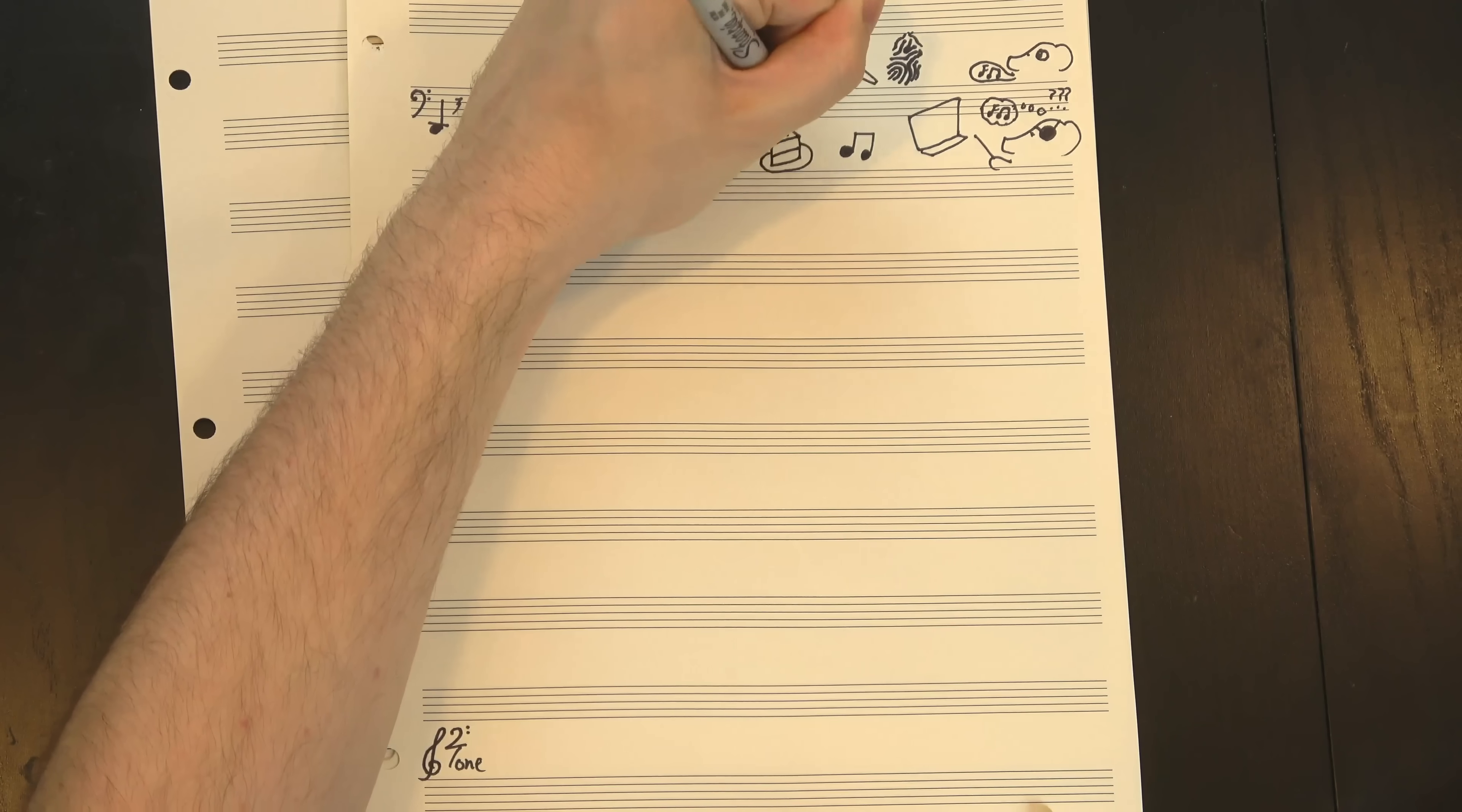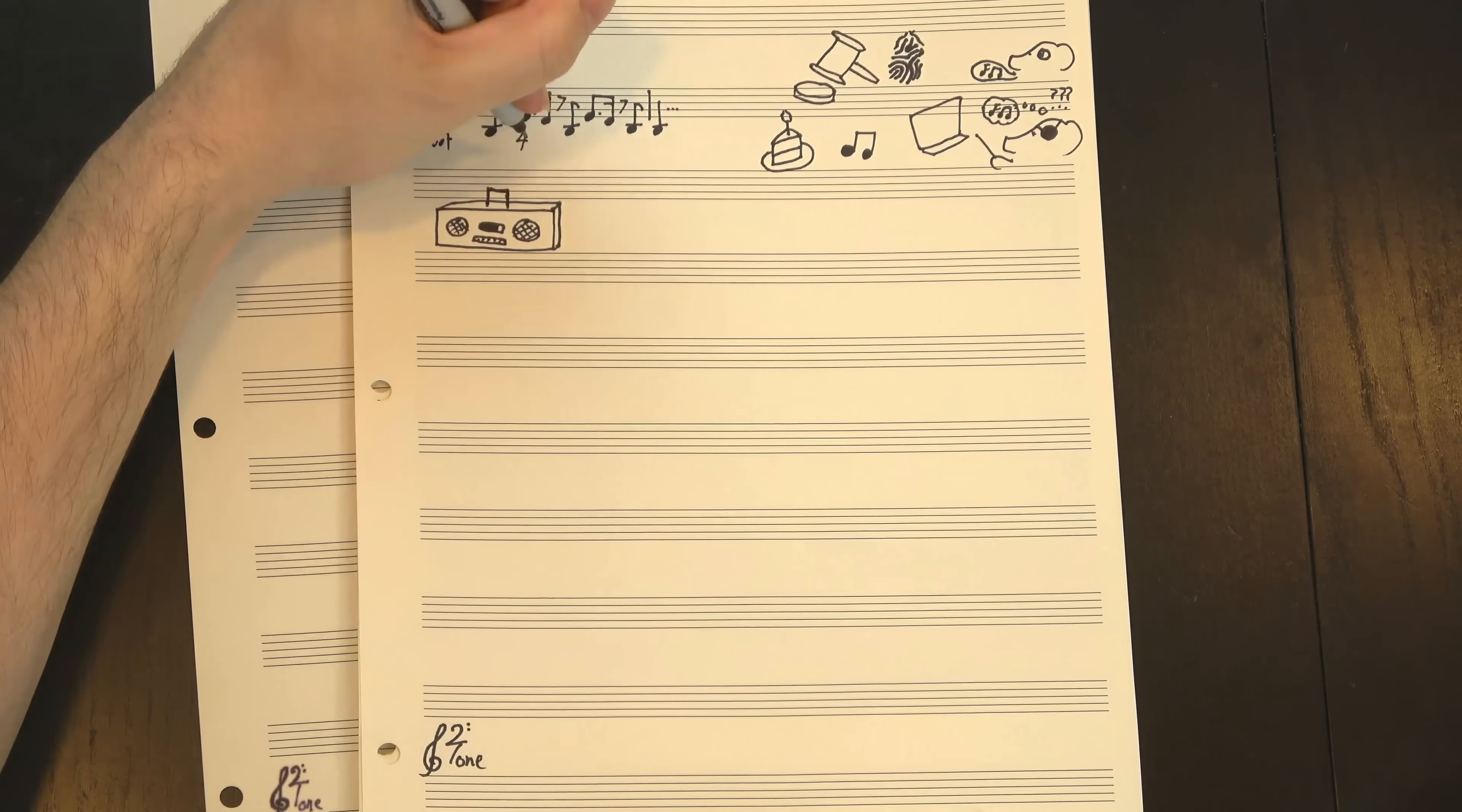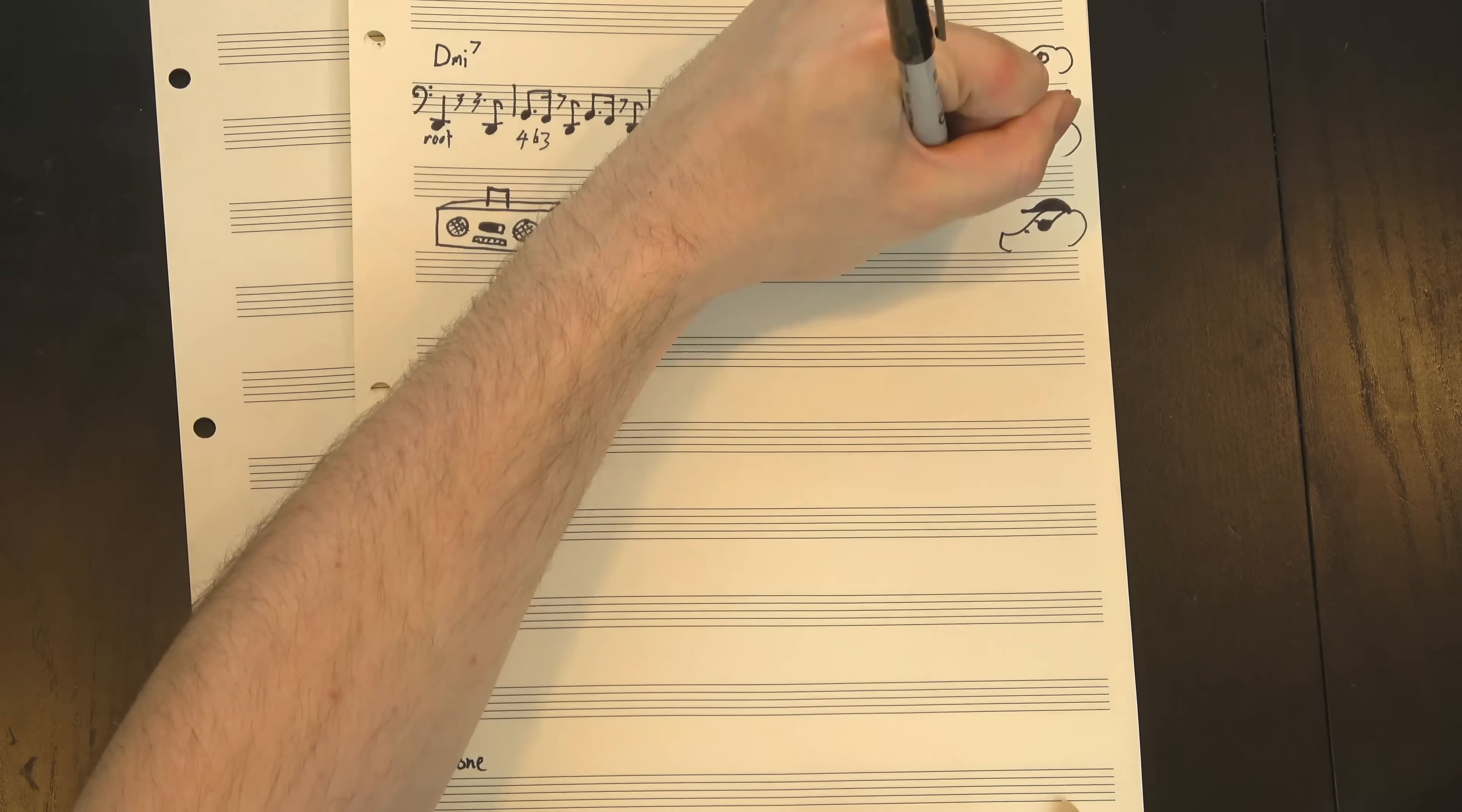Well, let's start with the notes, because that's the easy part. We're pretty clearly in D, so we start on the root, jump up to the 4th, then slide down to b3, and repeat. This is one of the most classic blues licks of all time, but with a twist.